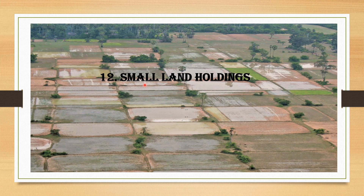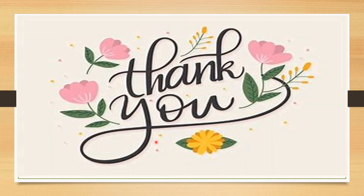The final problem is small land holdings. In India, most farmers are small farmers with very little land for their livelihood. They do not completely depend on agriculture; instead, they also focus on other jobs for their survival, their livelihood, and their children's education. This is also one of the reasons why farmers are not fully engaged in agriculture. Thank you for watching this video.